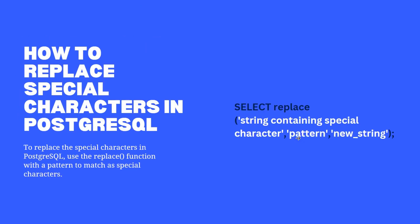To replace a special character in PostgreSQL, we use the same replace function from the first section. The syntax is: after SELECT, specify the replace function, which contains three parameters. First, specify the string containing a special character. Then specify the pattern — the special character you want to replace. The new string is what will be placed in place of that special character.